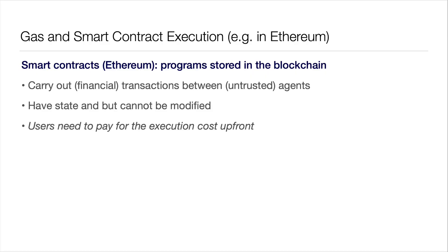How is that related to smart contracts? Here probably everybody knows what a smart contract is — it's a program that's stored on the blockchain to carry out some financial transactions. They have state. The state can of course be modified, but the program itself, after you publish it, cannot be modified anymore. That's part of the point of it.